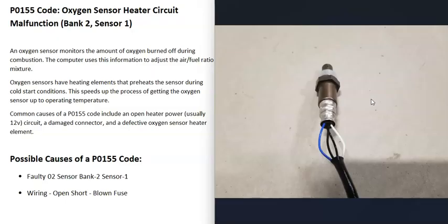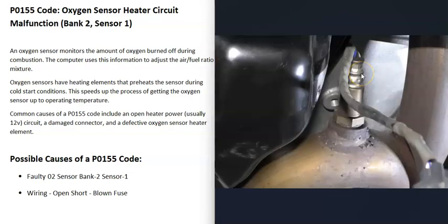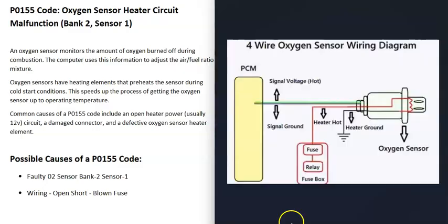The first thing that could cause this is a bad bank two sensor one O2 sensor, so the first thing to do if possible is go and test it. The next thing that could cause this issue is the wiring going to the sensor. If there's anything wrong with the wiring like an open, a short, or a bad connection, that's going to cause problems. If you test that sensor and it tests good, then check the wiring.